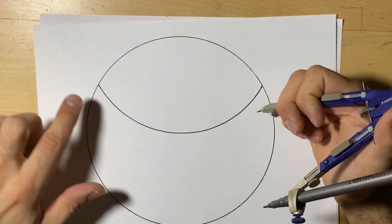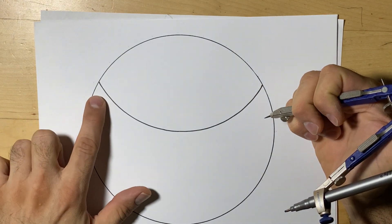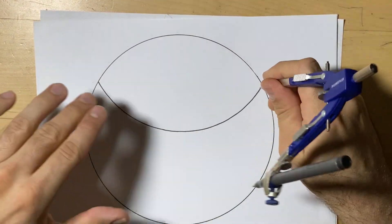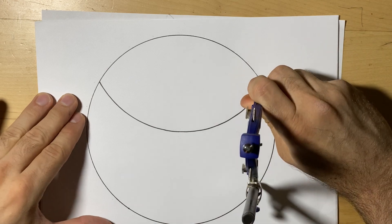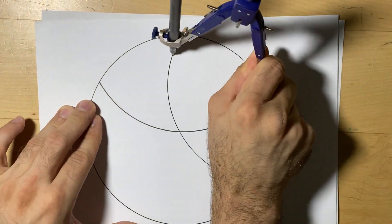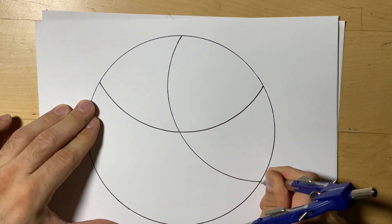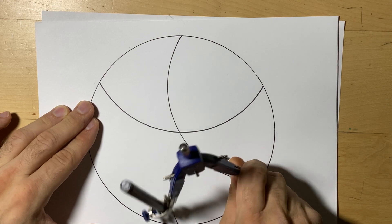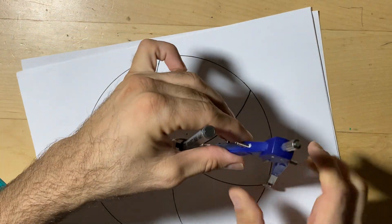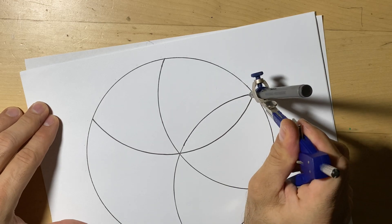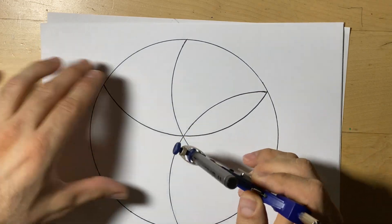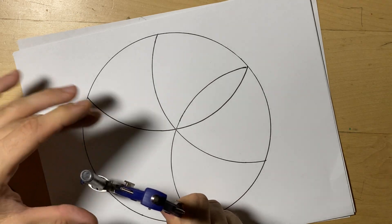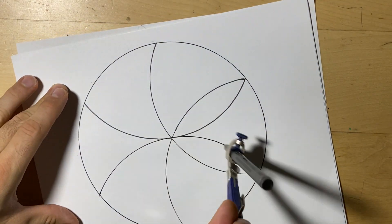We're going to go to one of the two intersecting spots where the arc and the circle meet, and we're going to repeat that. Now if we do this six times, we're going to have the seed of life pattern where you can draw all sorts of shapes: rhombus, rectangle, trapezoid, regular triangle.